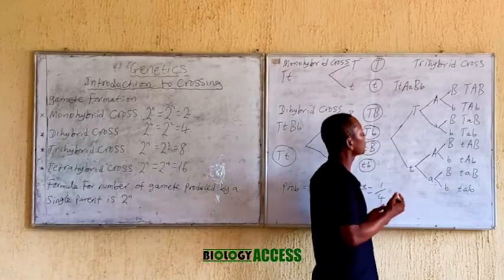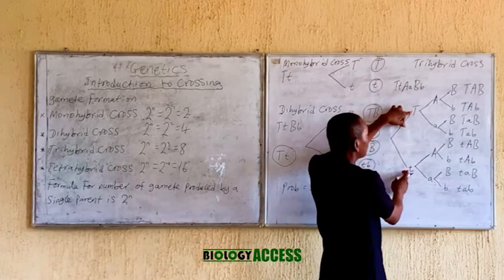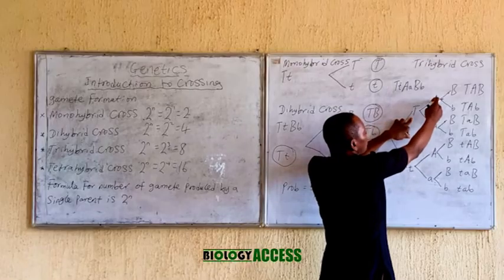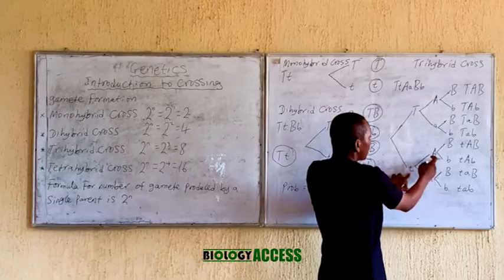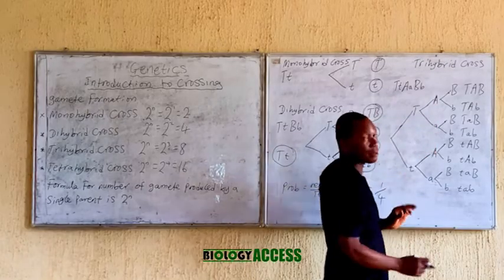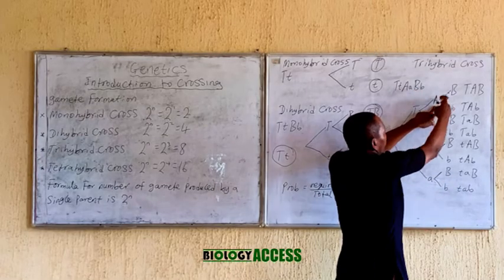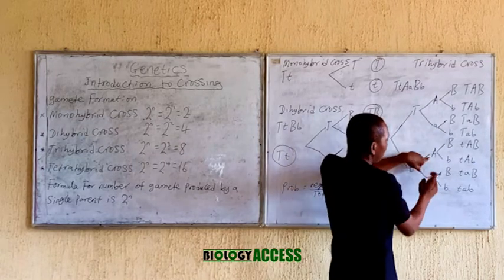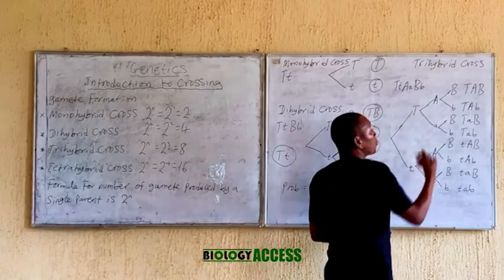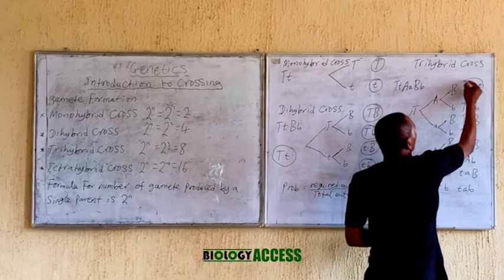For trihybrid cross gamete formation, you pick the first pair and separate them as usual. The second pair has to be attached to each of the first pairs. I attach this giving capital A and small a. Now for the third pair, it has to be attached to each branch — capital B and small b are attached to every branch of the first two pairs. Capital A, capital C, capital A and capital B represents one gamete. You then work through the remaining combinations.